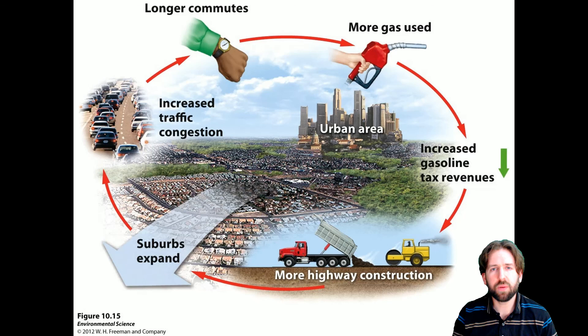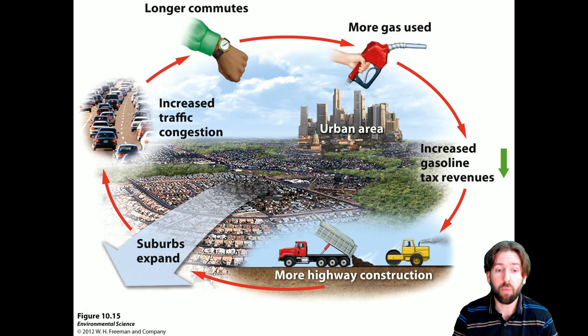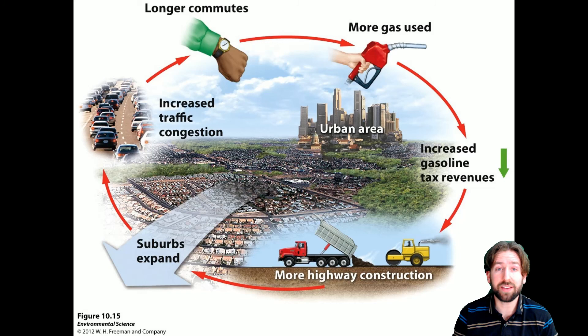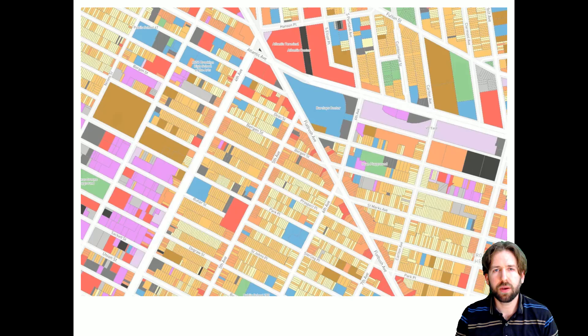Here we can see a cycle of induced demand. It starts with increased gasoline tax revenues, and because they get all these extra taxes, they're going to create more highways. Because there are more highways, the suburbs are going to expand — if more people can drive in, more people can be around these big roads. So you get more suburbs, but that leads to more traffic, a longer commute, and more gas usage. Since it's a gasoline tax, that increases as well. So more gas tax leads to more highway construction, more suburbs, more traffic, a longer commute, more gas, and so on — until you have an enormous urban area with more highways and more induced demand.